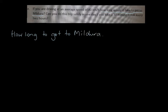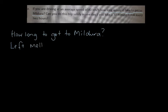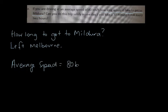In this question you're being asked to work out how long it would take to get to Mildura. The question assumes you remember that we left Melbourne, basing this on the previous question where you worked out the distance between Melbourne and Mildura. Now you're being told you're traveling at an average speed of 80 kilometers per hour.